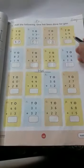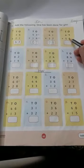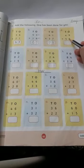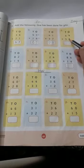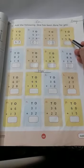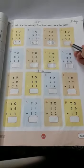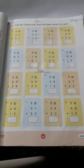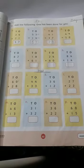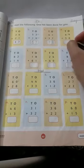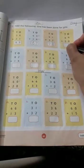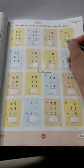Next, nine plus zero. Zero is a special number. Whatever you add or subtract with zero, the number stays as it is. So nine plus zero means nine stays the same. Write nine as it is.